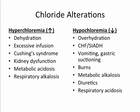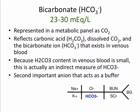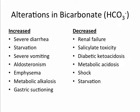Bicarbonate is represented in a metabolic panel as CO2. The CO2 on a BMP reflects carbonic acid, dissolved carbon dioxide, and the bicarbonate ion that exists in venous blood. Because carbonic acid content in the venous blood is small, this is actually an indirect measurement of bicarbonate. Bicarbonate is the second most important anion that acts as a buffer. Bicarbonate can be increased when there is a loss of acid to bind to, and decreased when there is an excess of acid to bind to.